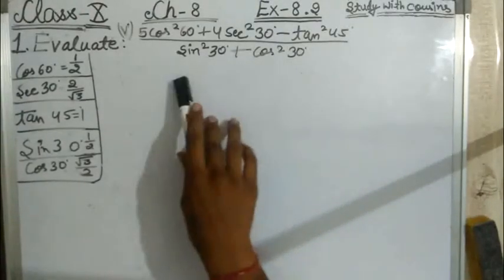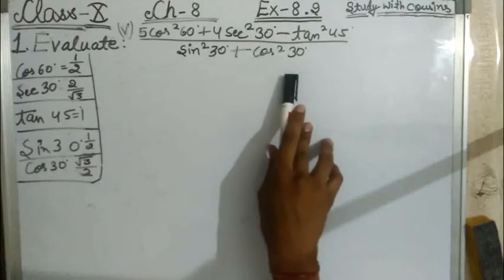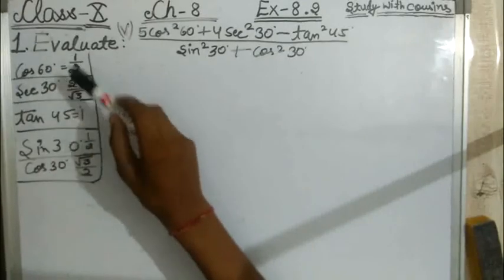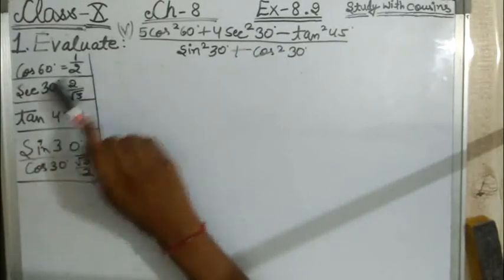These values which we have done in the trigonometric table, we will get all values from the trigonometric table. For 60 degree, 1/2.